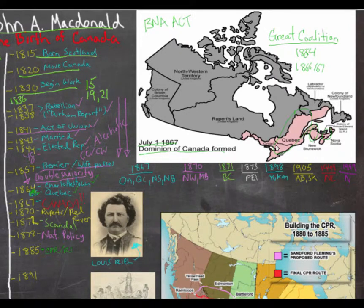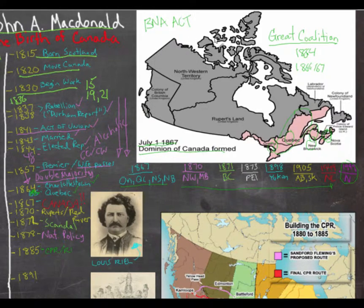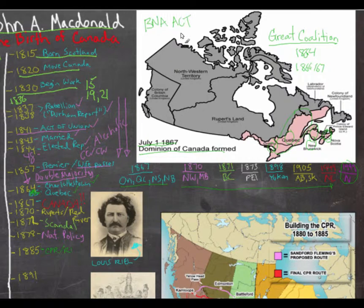The first four provinces to join were Ontario, Quebec, New Brunswick, and Nova Scotia. Each province and territory's joining date is noted — the last one was Nunavut in 1999. On that same trip to London in 1867, MacDonald actually wooed his second wife, so it was a pretty fortuitous trip — he created a country and got himself a wife.